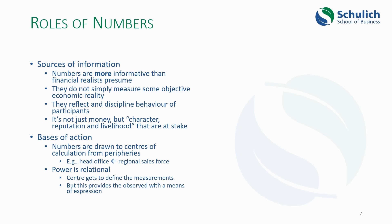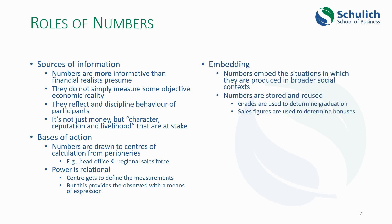The third use of numbers that Vollmer draws our attention to is the notion of embedding. What he means is that numbers embed the situation in which they're produced into broader social contexts. Numbers get created, stored, and then reused in other situations. For example, the grade you get in class is stored by the school and used later to determine whether you graduate. If you're working as a salesperson, the sales figures are stored and later used to determine bonuses — going from the specific face-to-face selling situation to abstracted numbers used in your employment relationship with the firm.